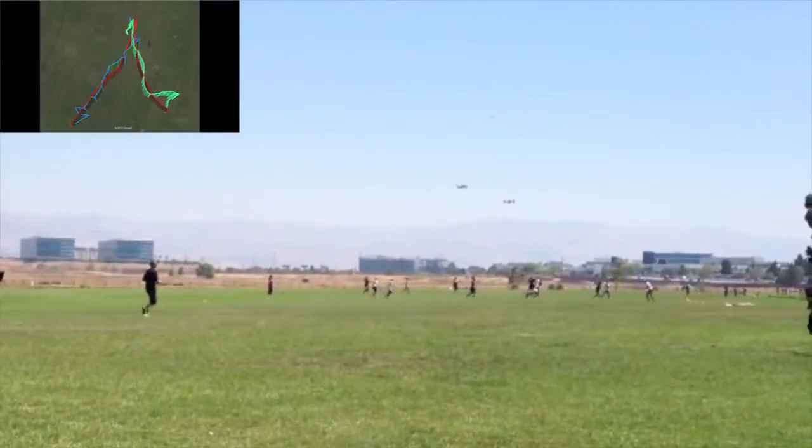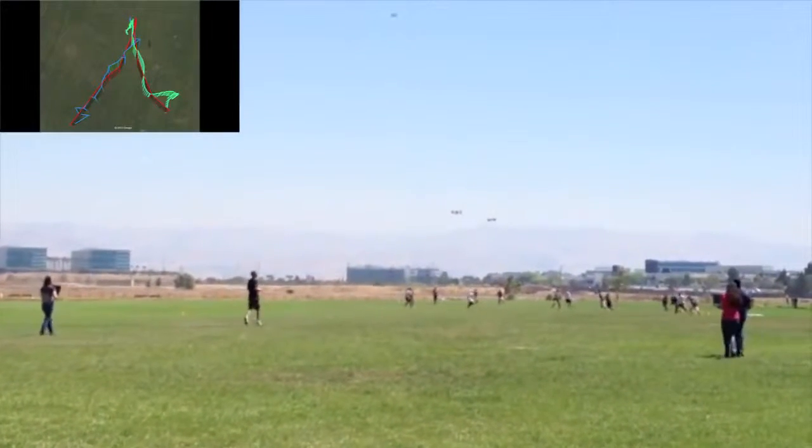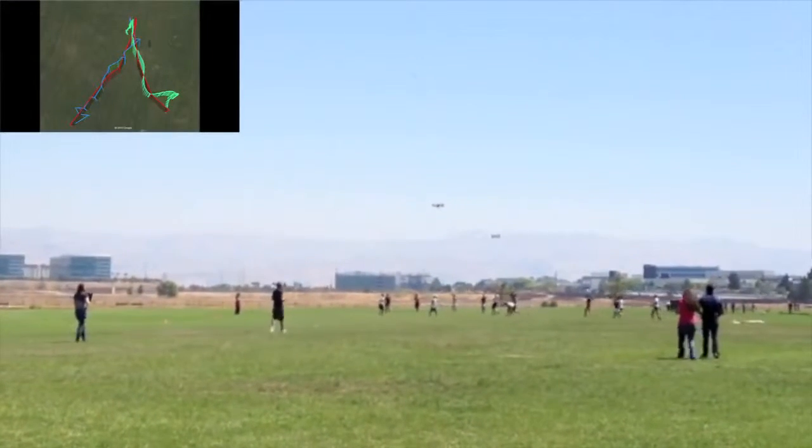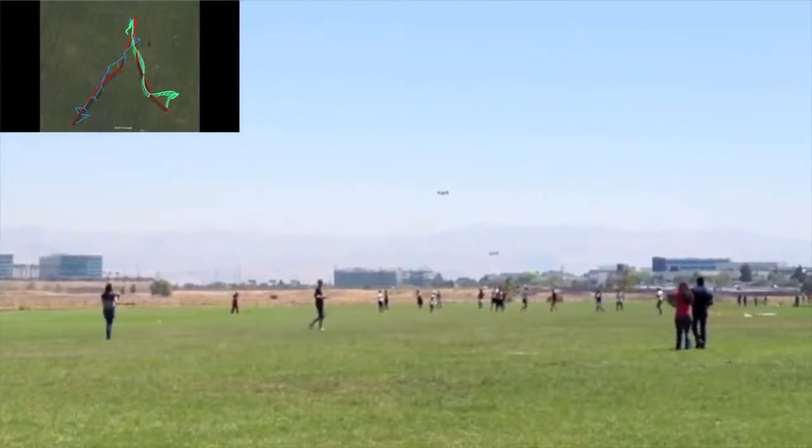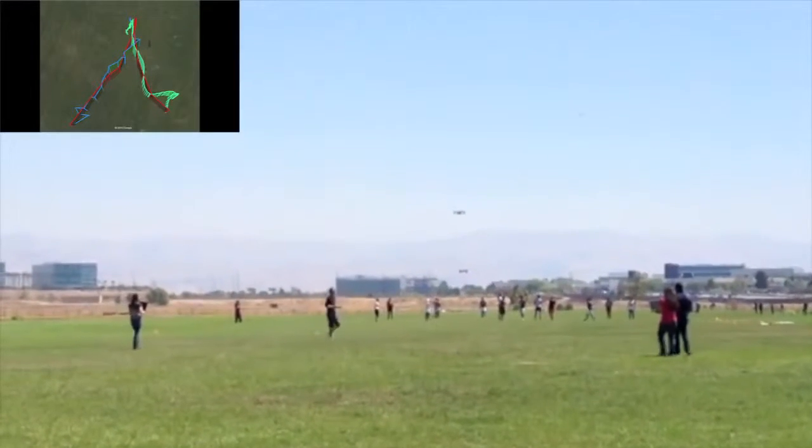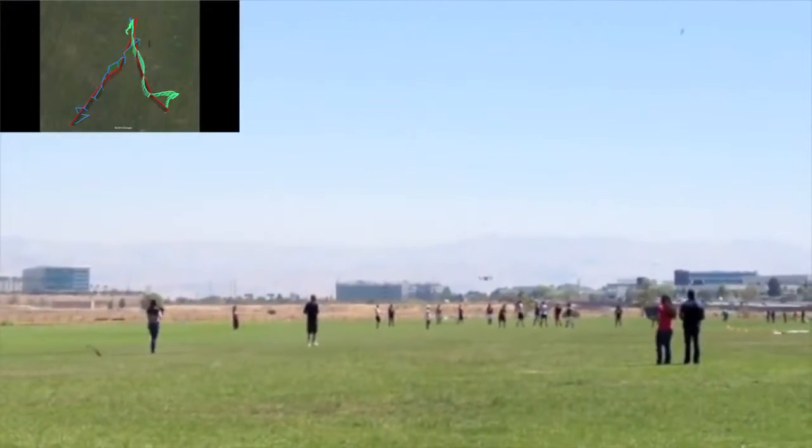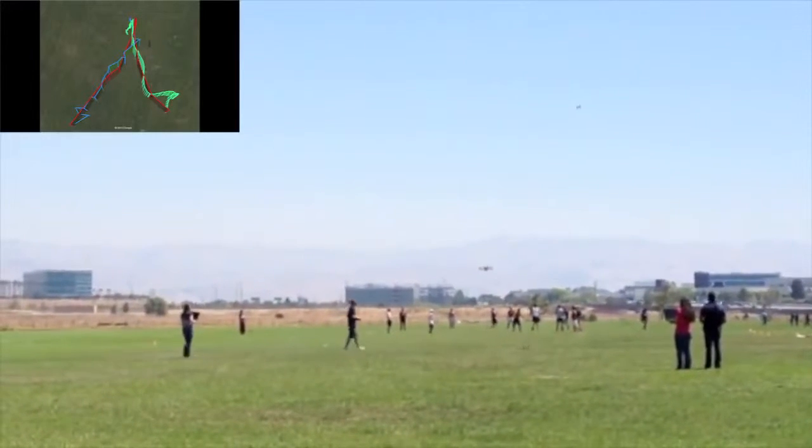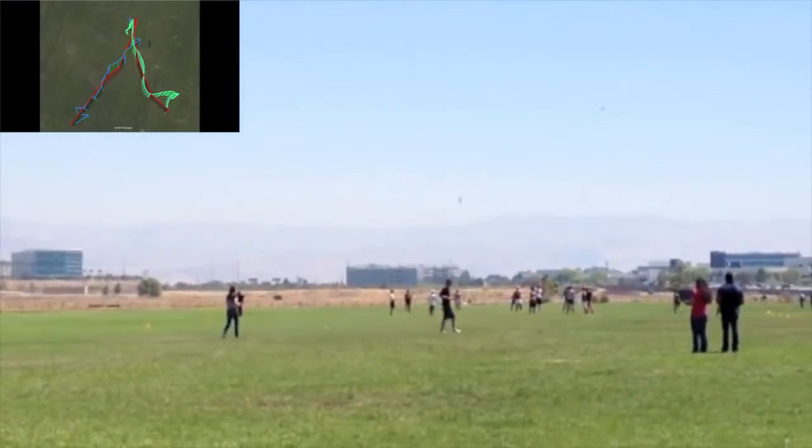After each test, a 3D representation of the flight is created using the flight log data from Mission Planner, which can be seen in the top left corner. This is then compared with the predetermined path, which allows the team to characterize the vehicle performance and its ability to execute its mission profile.